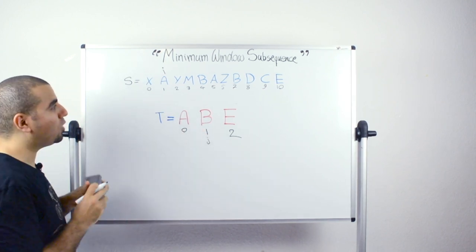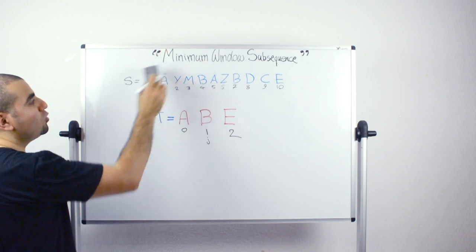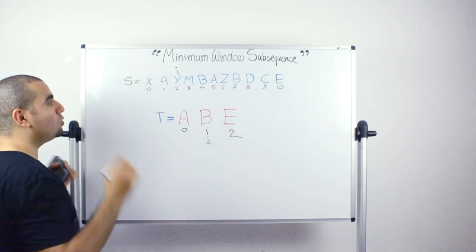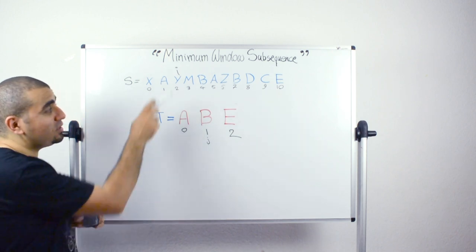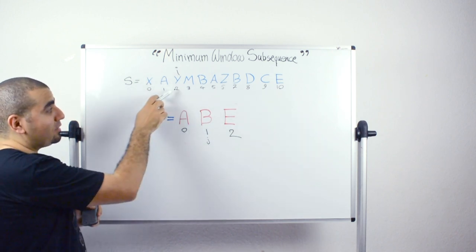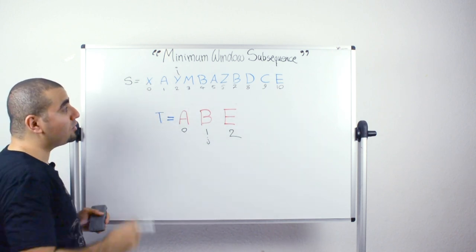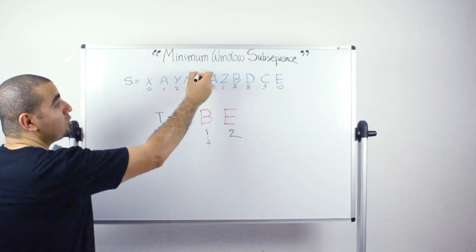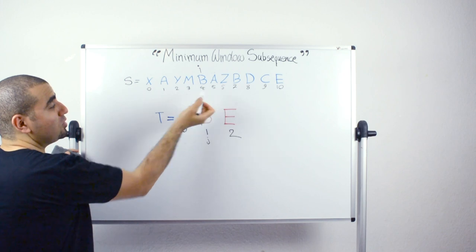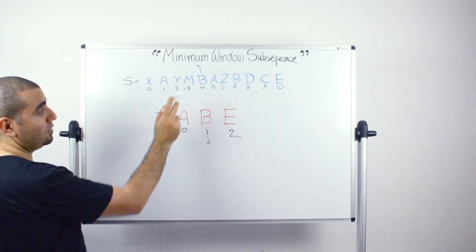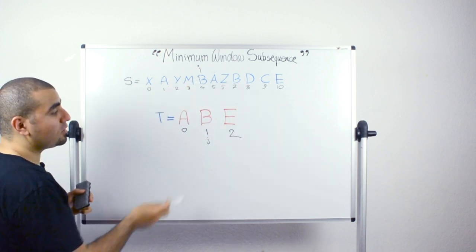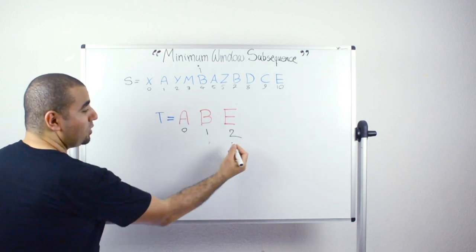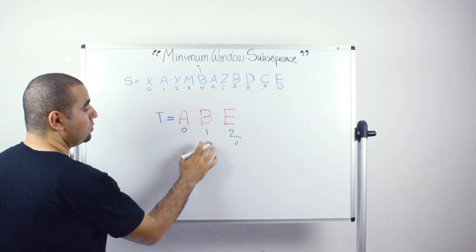Now j is at 1 and i moves to position 2. Is there a match between character at i and character at j? No there is no match. So we keep moving until we reach position 4, where we find 'b' and 'b'. It's time to move j to the next position, which is 2.